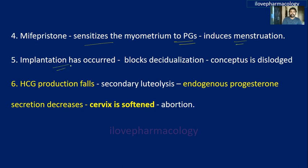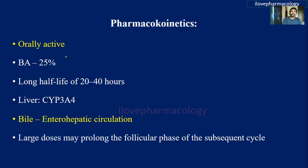If implantation has already occurred, it blocks decidualization and dislodges the conceptus, which is removed through menstruation. Along with this, hCG levels fall, leading to secondary luteolysis, which reduces endogenous progesterone secretion, thereby leading to softening of the cervix, which favors abortion.